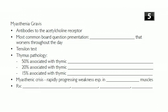Myasthenia gravis is a disorder with fluctuating weakness in the limbs, eyelids, extraocular muscles, and potentially respiratory muscles, caused by antibodies to the acetylcholine receptor. On tests, you'll often see a patient with worsening ptosis and diplopia that worsens throughout the day. Diagnosis is made with the Tensilon test — edrophonium — which is very short-acting. It can be quite dramatic: a nearly paralyzed patient can begin moving and talking within seconds of receiving edrophonium.